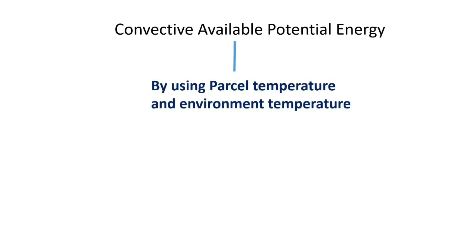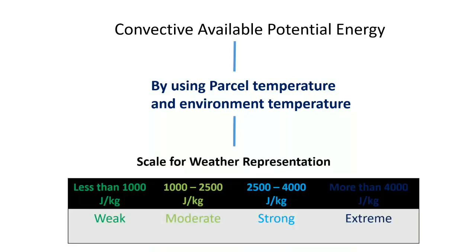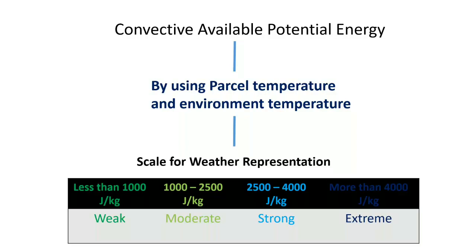The convective available potential energy is calculated using thermodynamic charts like the T-phigram or the skew T-log P chart. We calculate parcel and environment temperature at each level from LFC to LNB. From these calculated values, we can predict weather using this table.